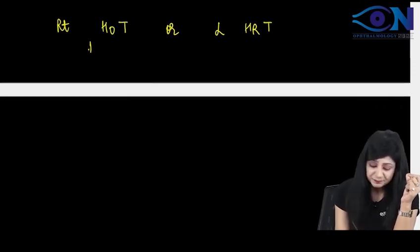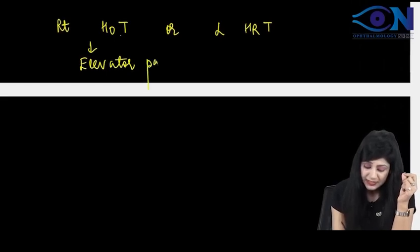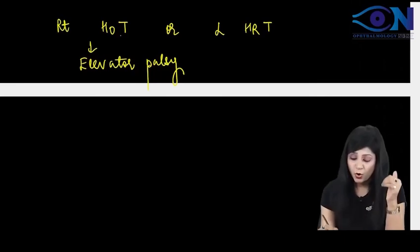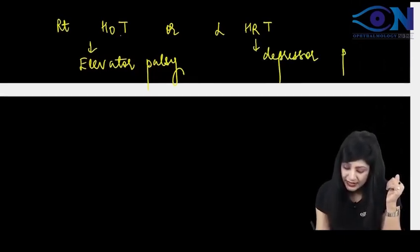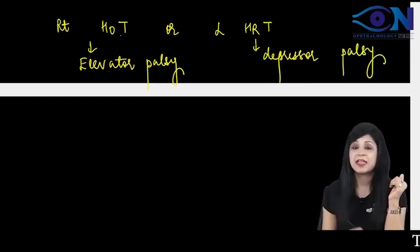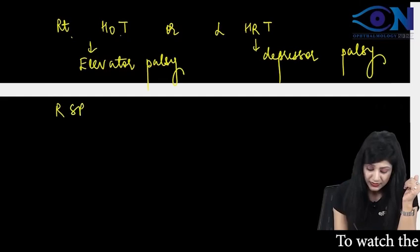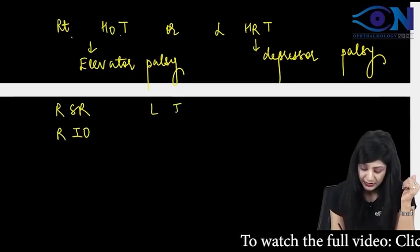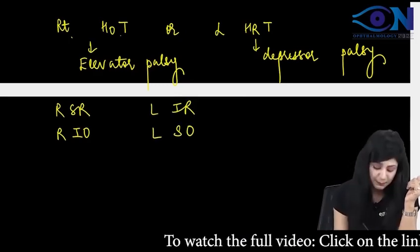Either it's elevator palsy of the right eye, that's why it's going into depression, or it's depressor palsy of the left eye, that's why it's going into elevation. What are the elevators of the right eye? Right superior rectus and right inferior oblique. What are the depressors of the left eye? Left inferior rectus and left superior oblique. This was your step number one.